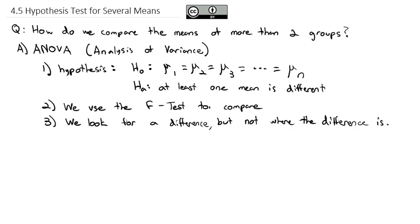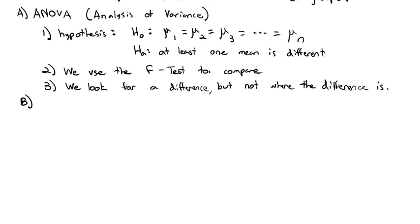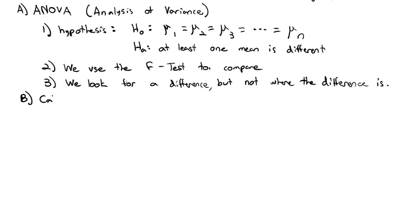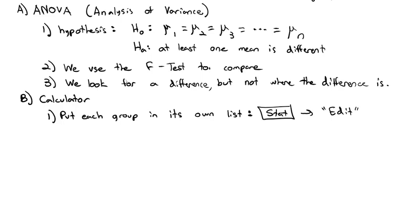So for today, all we're looking at is: are they all the same, or is there a difference somewhere? We're not going to spend our time with the complex calculations of the ANOVA. We're just going to look at actually carrying it out and having our calculator do the calculations. We're going to put each group in its own list. We'll hit the stat button, then select edit to edit our list. List one, we'll put the first group data. List two, the second group data. List three, the third group data, until we get all of our groups.